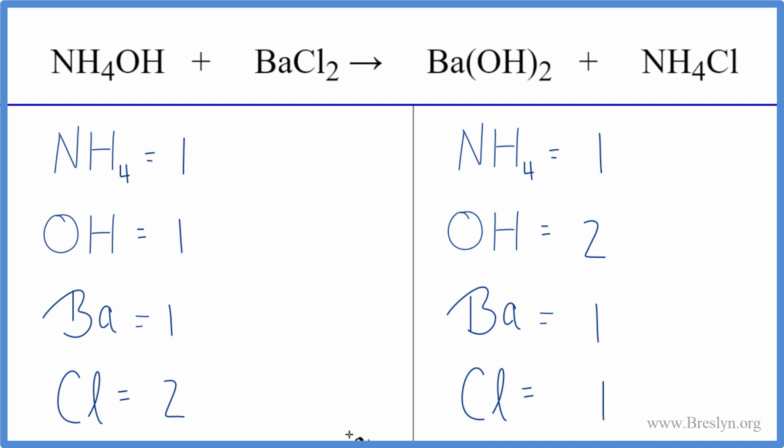So let's first double the chlorines on this side, and that'll balance those. So we put a two in front of the ammonium chloride. We have one times two, so we have two chlorines, and then one times two for the ammonium ion.